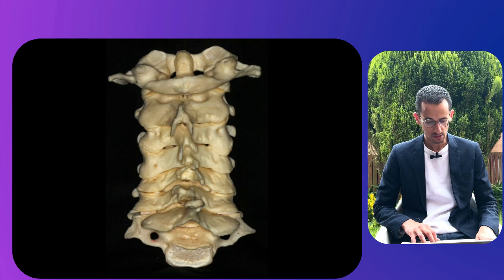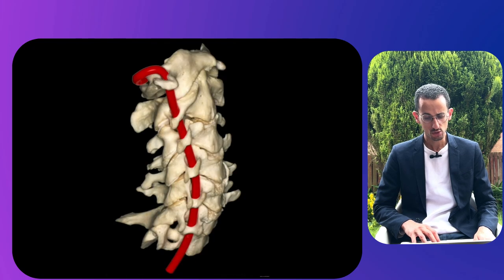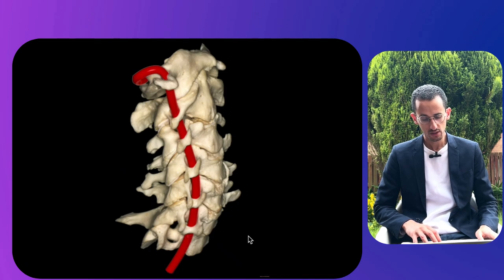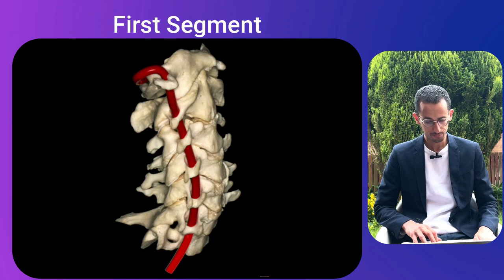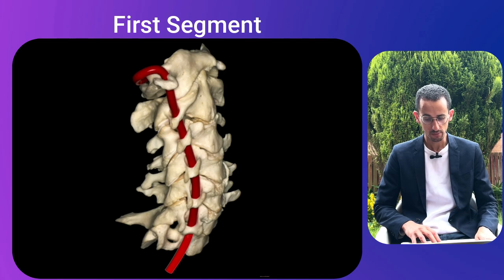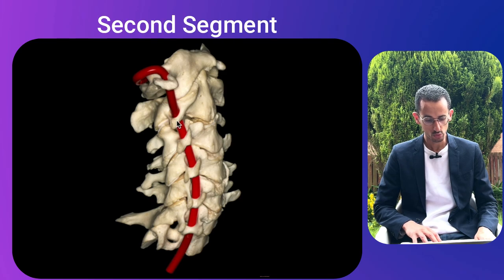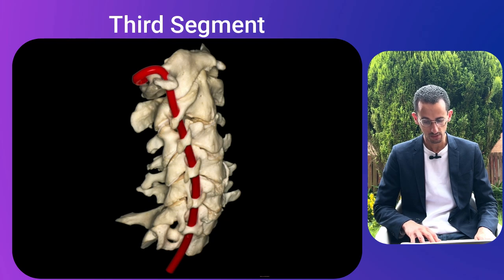The transverse foramen is also visible. The next picture shows the vertebral artery anatomy. The vertebral artery originates from the subclavian artery and enters the transverse foramen, which mostly happens at C6. The venous counterpart goes through the foramen of C7. The artery is divided into four segments: the first segment runs from its origin at the subclavian to just before it enters the foramen transversorium; the second segment passes through the foramen transversorium up to C2.